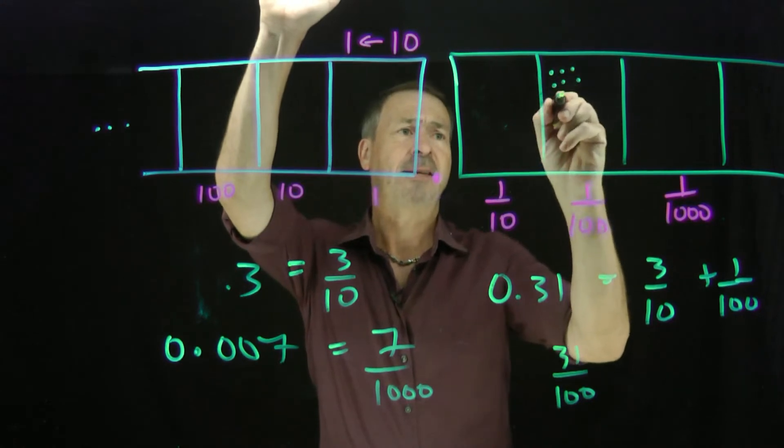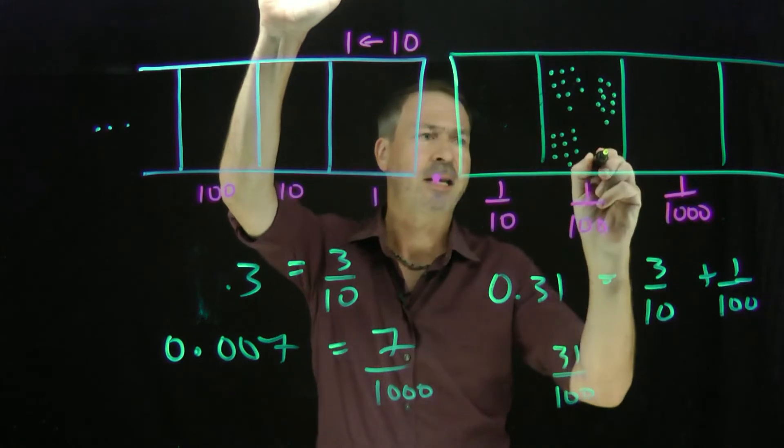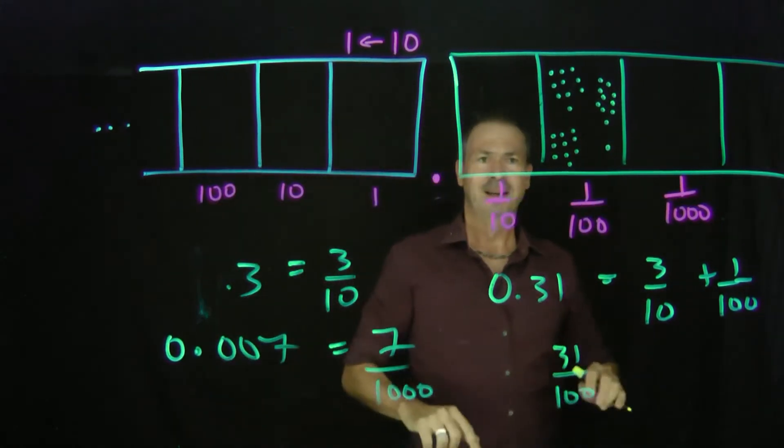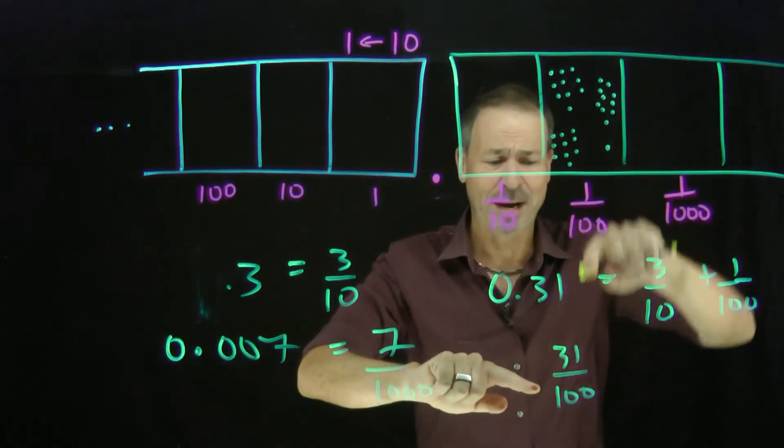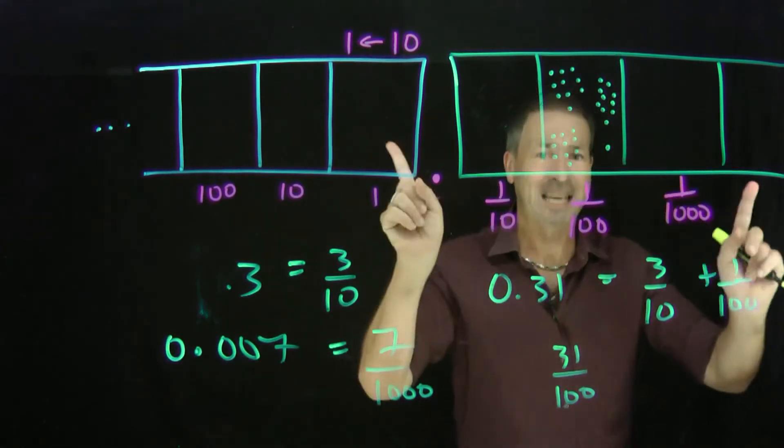Because thirty-one hundredths would be thirty-one of these. So let me draw thirty-one of those. There's a picture of thirty-one hundredths, and it looks very different from that: three tenths and one one-hundredth. Except you realize, oh, this is a ten-one machine.